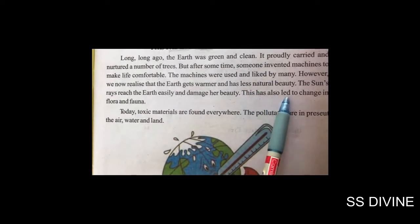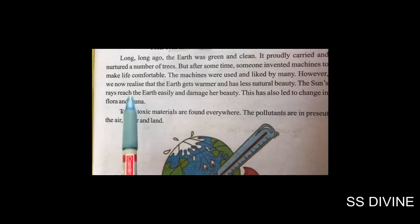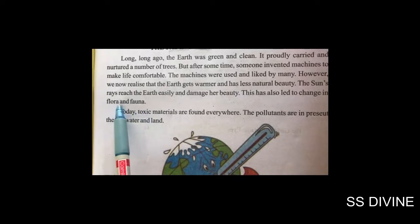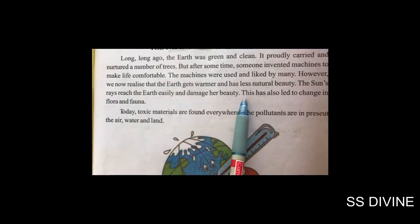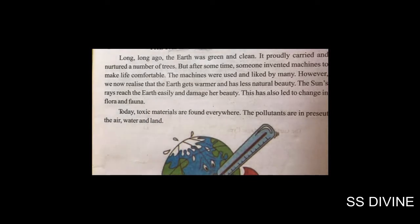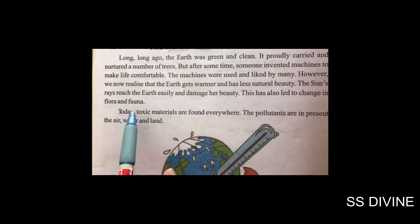This has also led to changes in flora and fauna. Flora का मतलब होता है plant life, और fauna का मतलब होता है animal life। उसी वजह से flora और fauna के अंदर भी changes आए हैं। हम लोग plants और animals के natural habitat को damage कर रहे हैं — construction के लिए forest से wood लेते हैं, जिससे plant and animal life प्रभावित होती है।